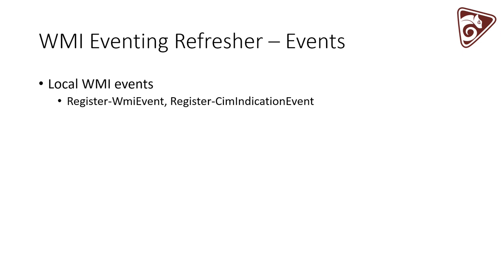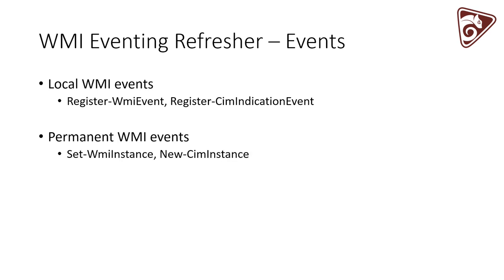The great thing about the CIM cmdlets is that they make deployment of WMI events and signatures much easier because they give you the flexibility to use either WinRM as a transport or legacy DCOM. So if you wanted to use the CIM cmdlets to deploy signatures to Windows XP, you would just specify as a CIM session option to use the DCOM protocol. For permanent WMI events, you use Set-WmiInstance with the older cmdlets, or New-CimInstance with the CIM cmdlets.